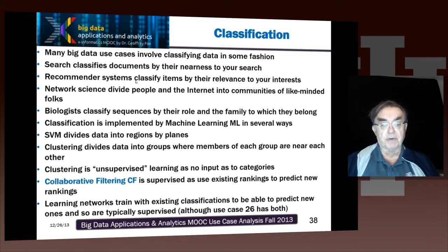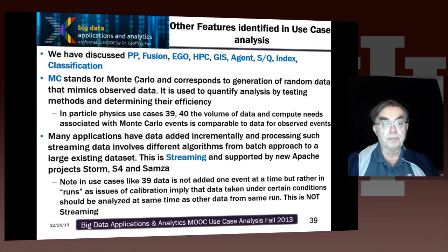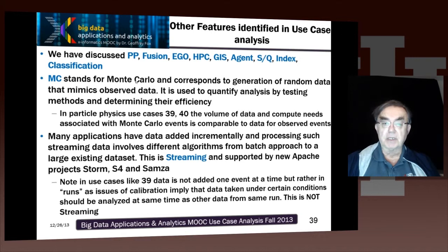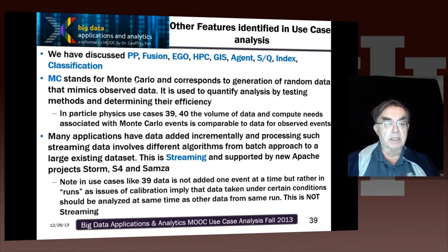So classification is very important. There are a couple of features we haven't covered directly. One is Monte Carlo, which is the generation of random data that mimics observed data. As I mentioned earlier, it's used to quantify analysis by testing methods and determining their efficiency.